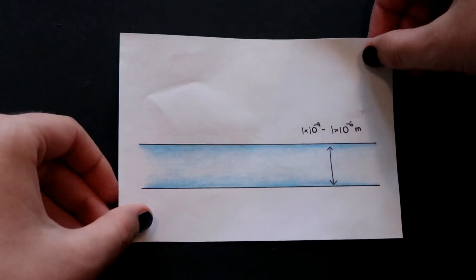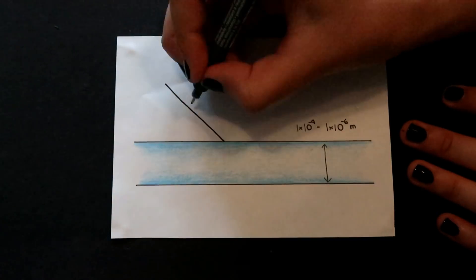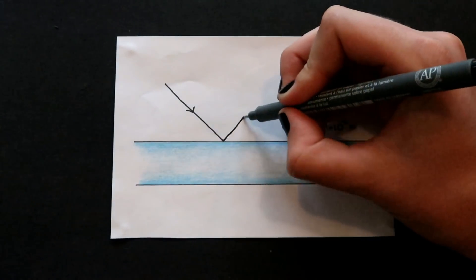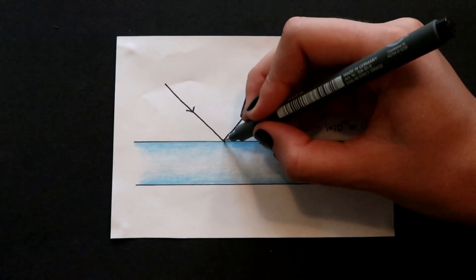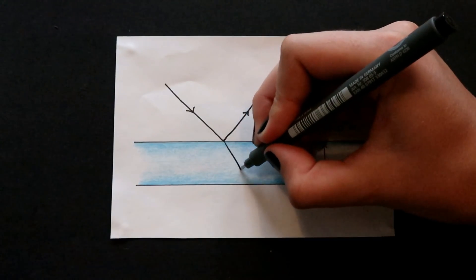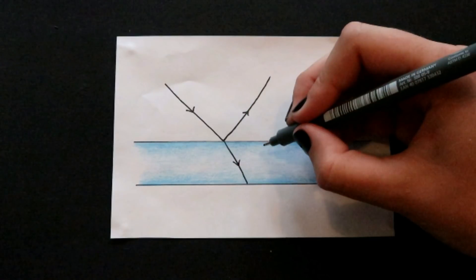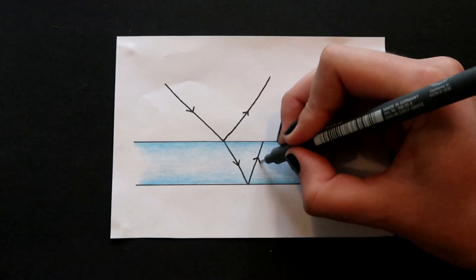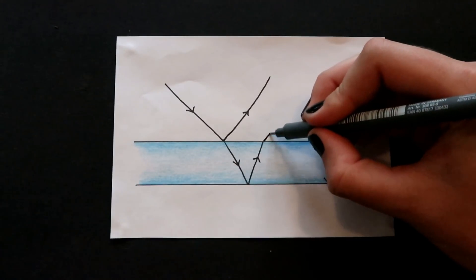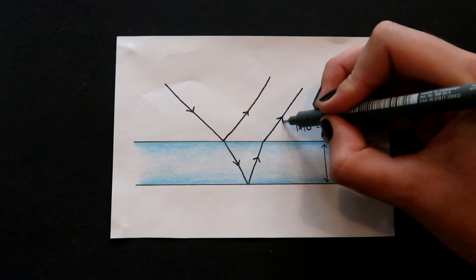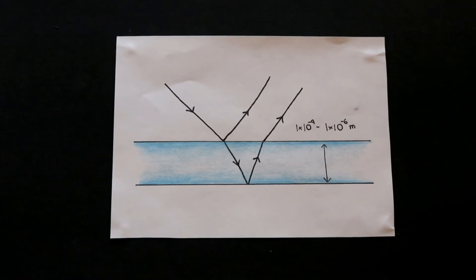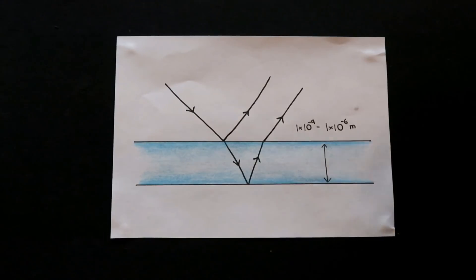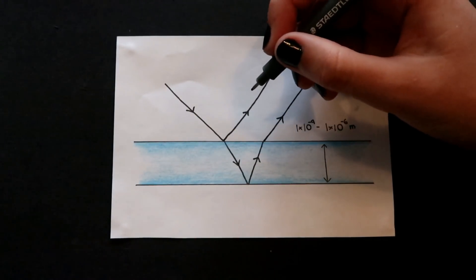So let's go back to our thin film again. If we shine a light on our film, a portion of the light will reflect off the boundary, and a portion of the wave will be transmitted through the boundary. The transmitted portion of the wave enters the new medium and continues travelling until it reaches the next boundary, where some of it will be reflected again. So in the end, we end up with two waves that emerge from the film — one wave that's reflected off the top of the film, and the other wave that's reflected off the bottom of the film. As we can pretty easily see, the wave reflected off the bottom of the film has travelled further than the wave reflected off the top.